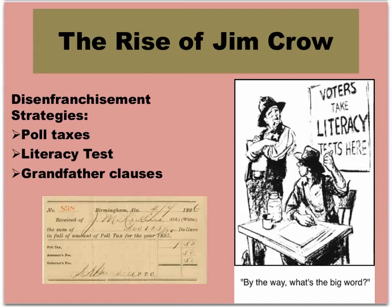Educational segregation and disenfranchisement were just the beginning. A whole system of state statutes known as Jim Crow laws institutionalized a very elaborate system of segregation. The deference and subjugation of the old rural South was extended to the new urban South.